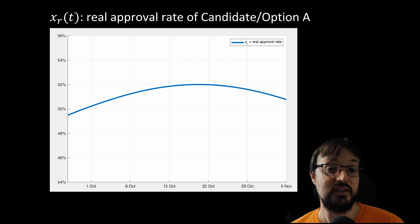This can actually be interpreted as a control engineering problem. In fact this problem consists in trying to reconstruct some hidden variable, the real approval rate, from some measured quantities, the surveys carried out by pollsters. This is called an observer design problem.